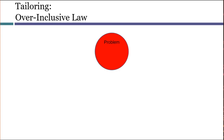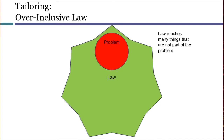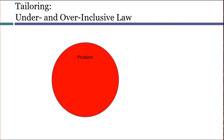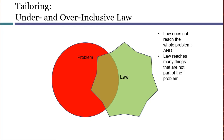An over-inclusive law regulates things that aren't part of the problem. So imagine Congress wanted to regulate products that substituted vegetable fat for milk fat, and it does this by banning all products that are sold in cans. Now this law will take care of the filled milk problem, but it also bans lots of other things sold in cans that aren't causing any alleged nutritional problem. It's quite possible for a law to be both over-inclusive and under-inclusive. By banning all foods sold in cans, Congress was under-inclusive because it didn't ban filled milk sold in bottles or cartons, and over-inclusive because it banned lots of healthy food sold in cans.